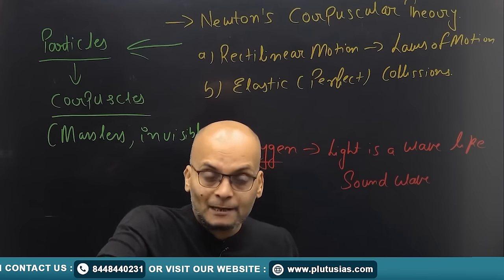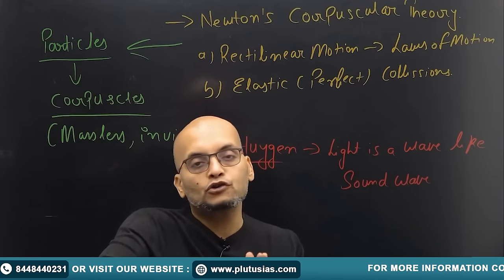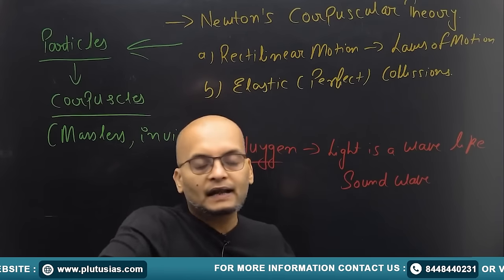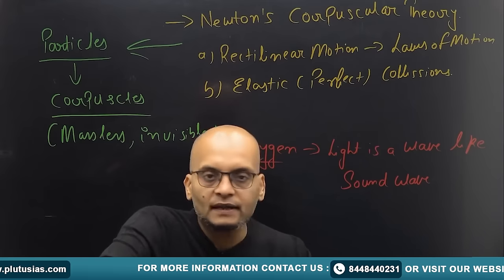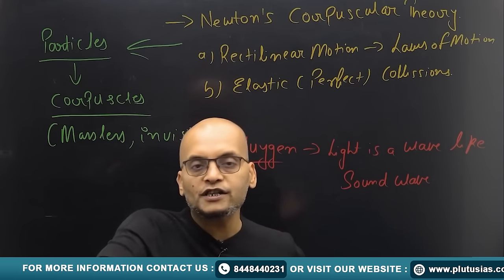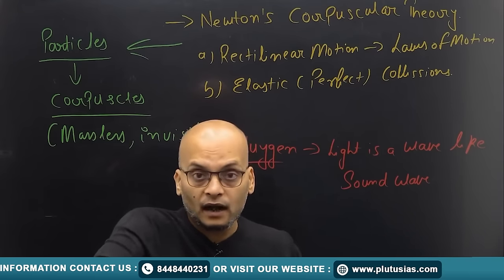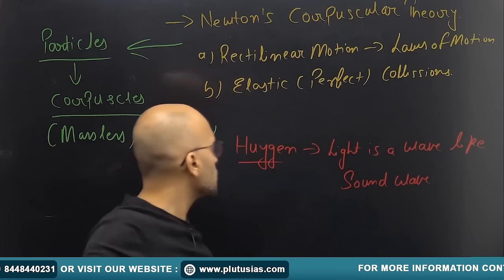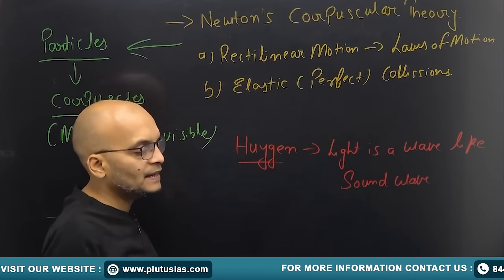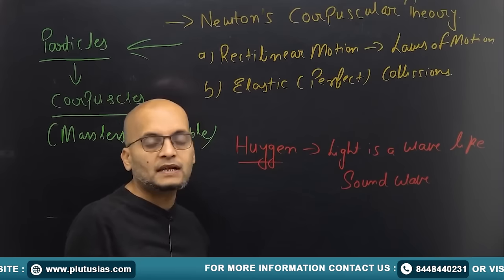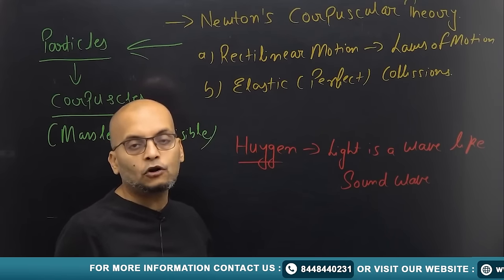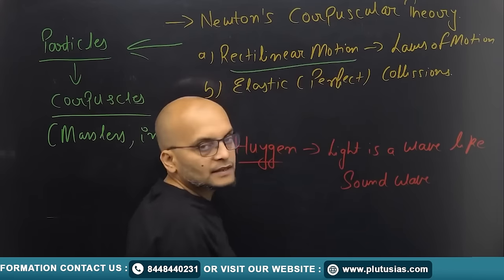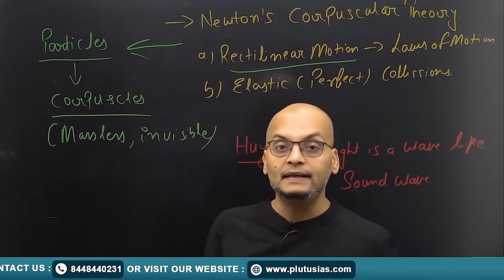Since light is made up of particles and Newton had already given his laws of motion, he said that the laws of motion will be applied to light as well, and thereby light is going to travel in a straight line — that is rectilinear motion.